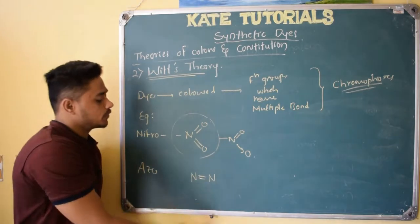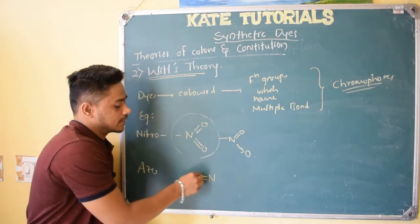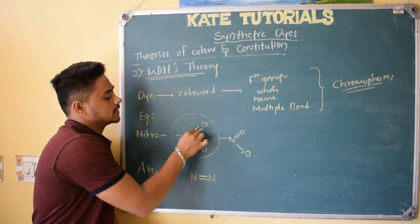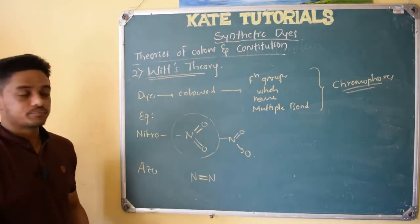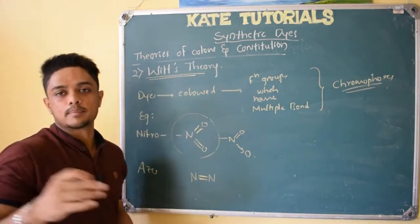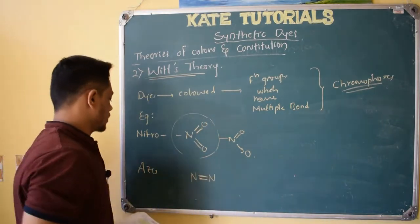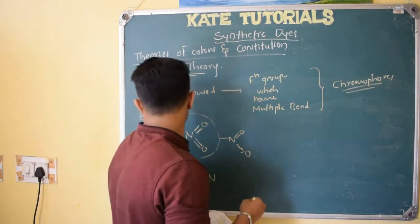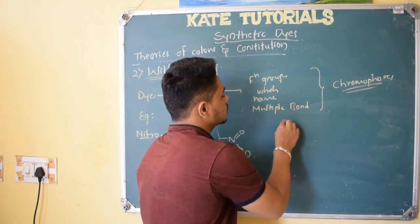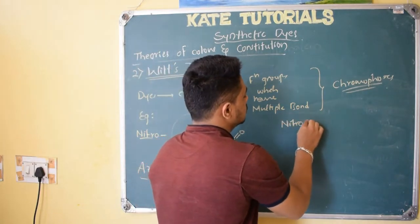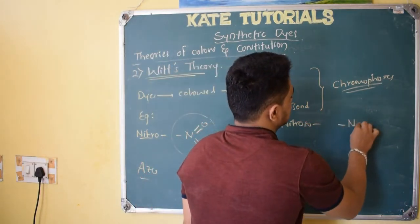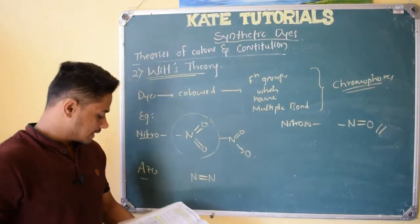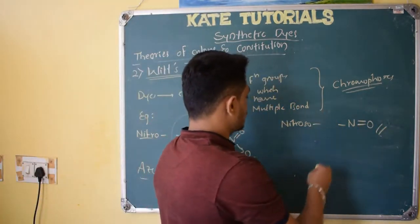Other examples include the Azo group — N double bond N — which also acts as a chromophore. Why does it act as a chromophore? Here also there is unsaturation — a double bond — and with nitrogen and oxygen, a pi bond is there. This bond helps in resonance, as we shall see in this video. So Azo group, Nitro group, and Nitroso group — N double bond O — all act as chromophores.